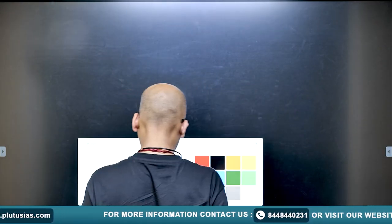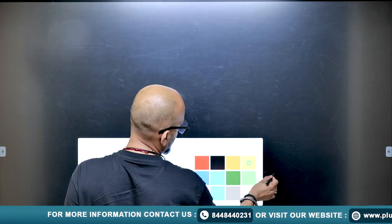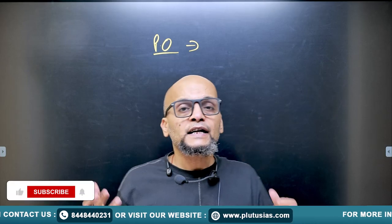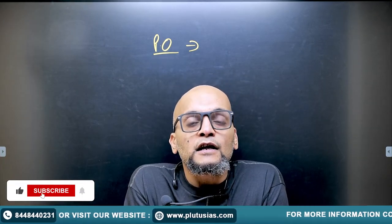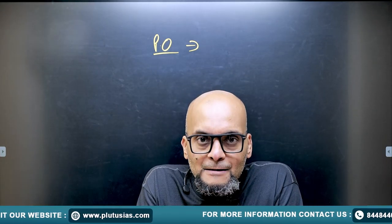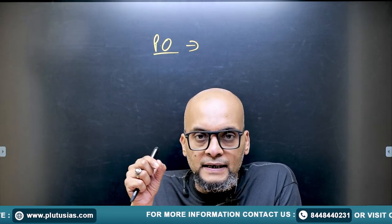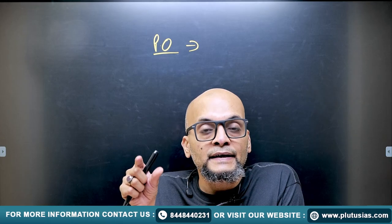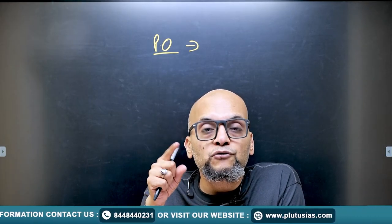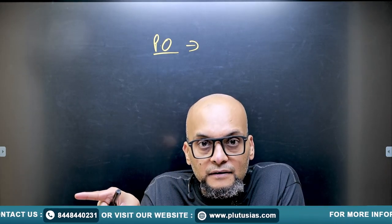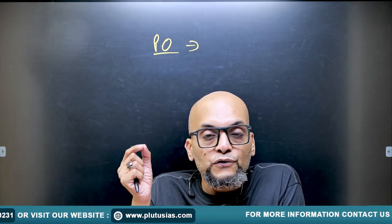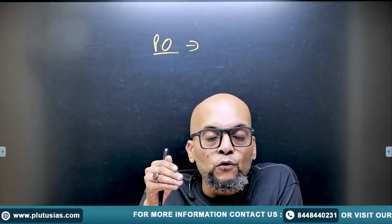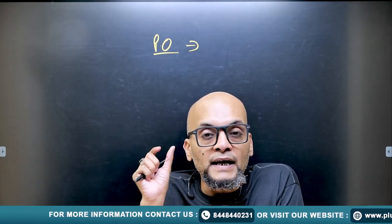If we talk about Pareto Optimality — I am writing it in short as PO — what is Pareto Optimality? This is a position where you cannot make someone better off without making someone else worse off. That means it is a position from where you cannot improve one person's situation without worsening another's.